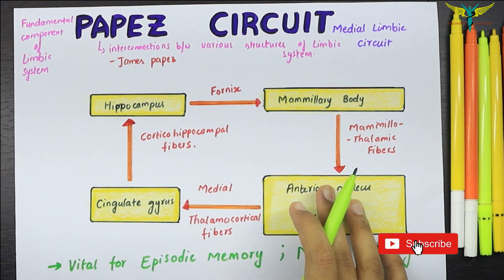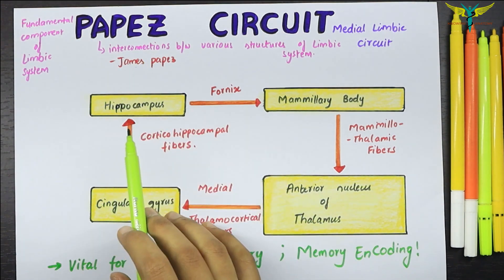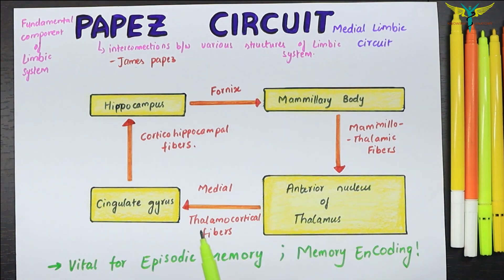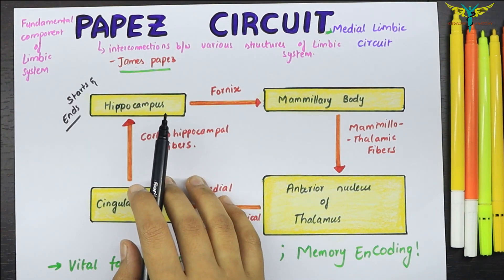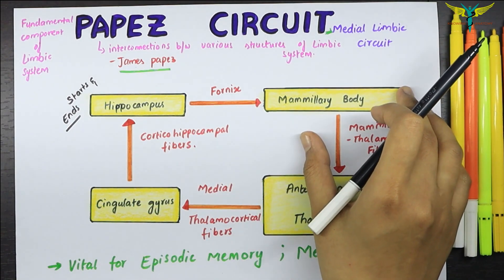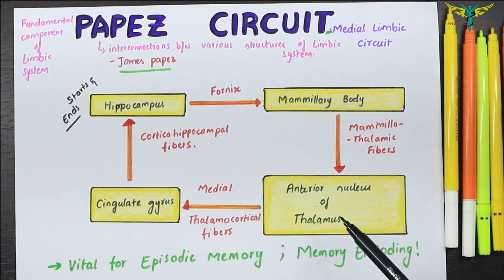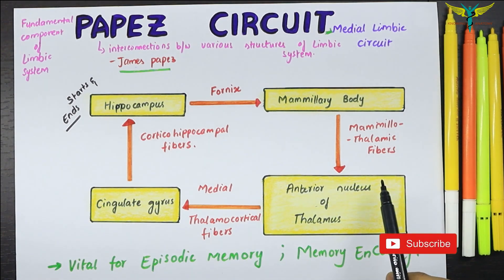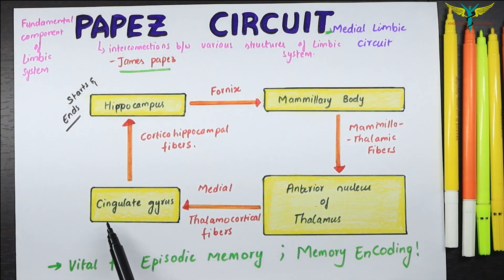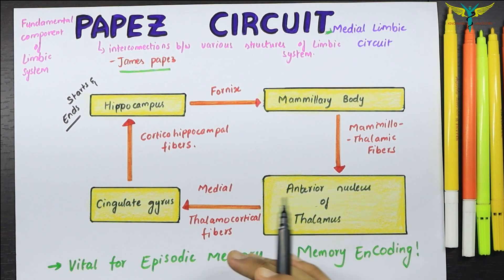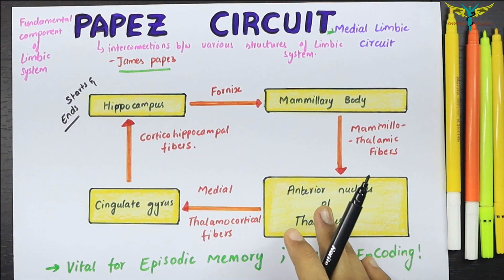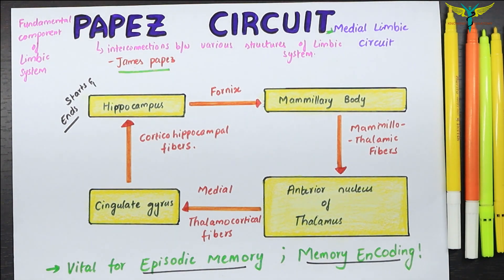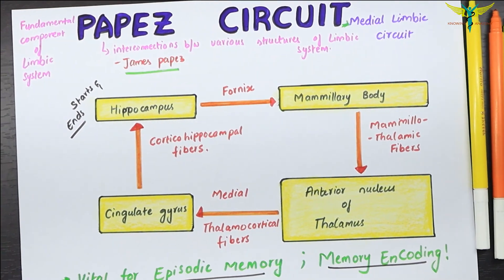To revise: the Papez circuit is a fundamental component of the limbic system, formed by interconnections between its various structures, described by James Papez, and also called the medial limbic circuit. It starts and ends at the hippocampus, connecting to the mammillary bodies via the fornix, then to the anterior thalamic nucleus via mammillothalamic fibers, then to the cingulate gyrus via medial thalamocortical fibers, and back to the hippocampus via corticohippocampal fibers. This circuit is vital for episodic memory and memory encoding.